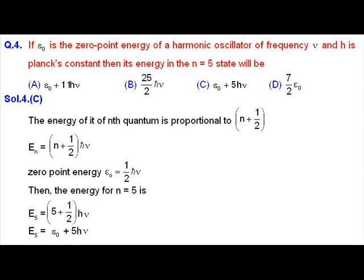For n = 5: E₅ = (5 + 1/2)ℏω = (5 + 1/2)hν = 5hν + (1/2)hν. Since the zero-point energy ε₀ = (1/2)hν, we get E₅ = ε₀ + 5hν. Therefore, E₅ = ε₀ + 5hν is the correct answer, and option C is correct.